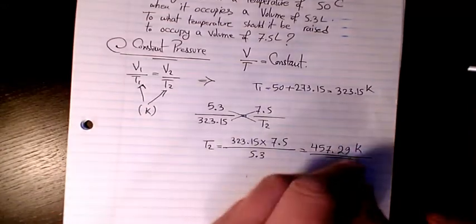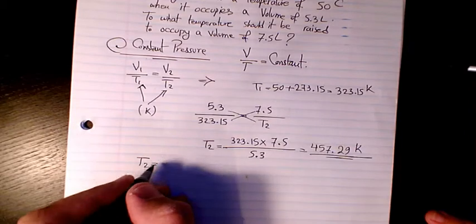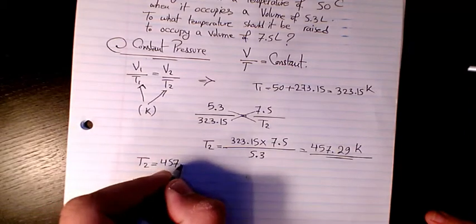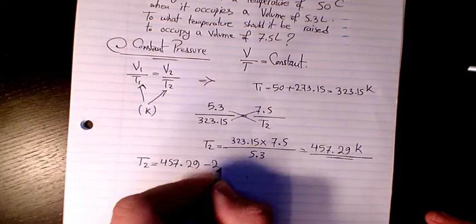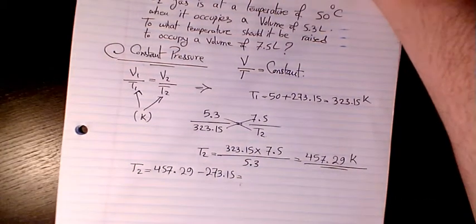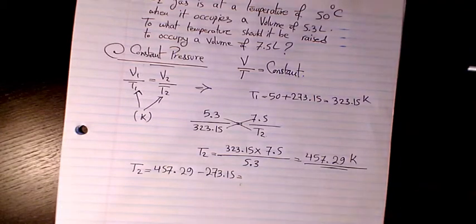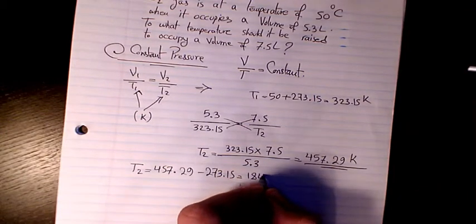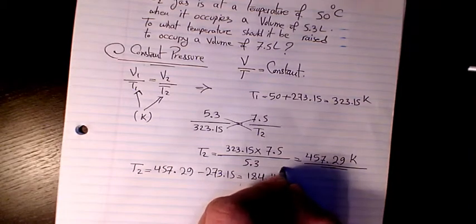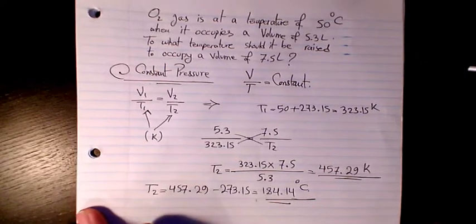And since it's Kelvin, we need to find it in Celsius. It's going to be 457.29 minus 273.15. That's going to make it 184.14 degrees Celsius. So that's going to be the final answer. As you can see,